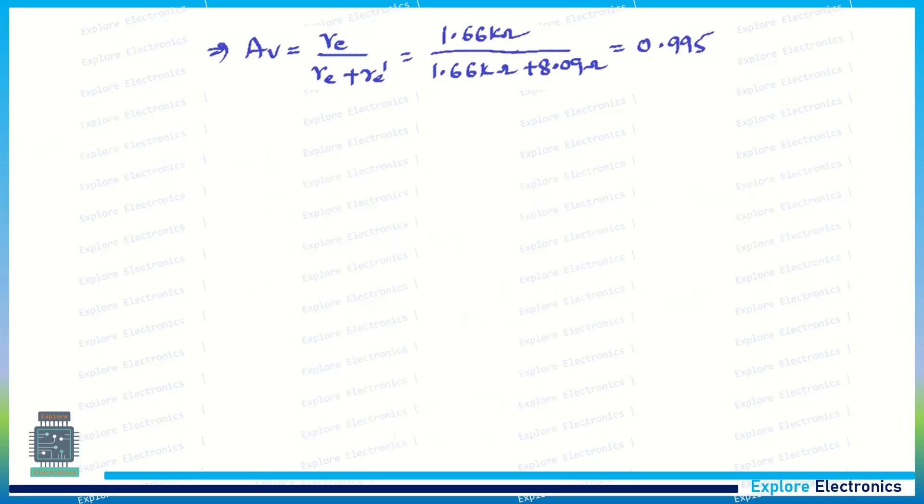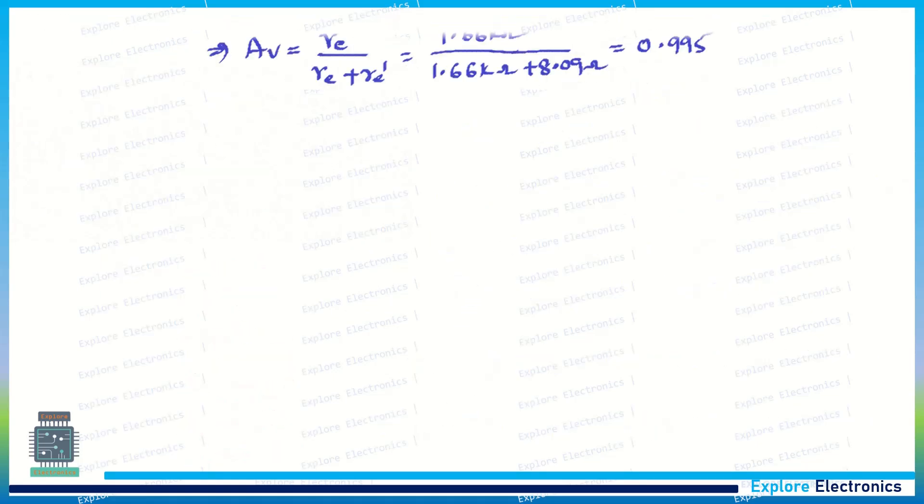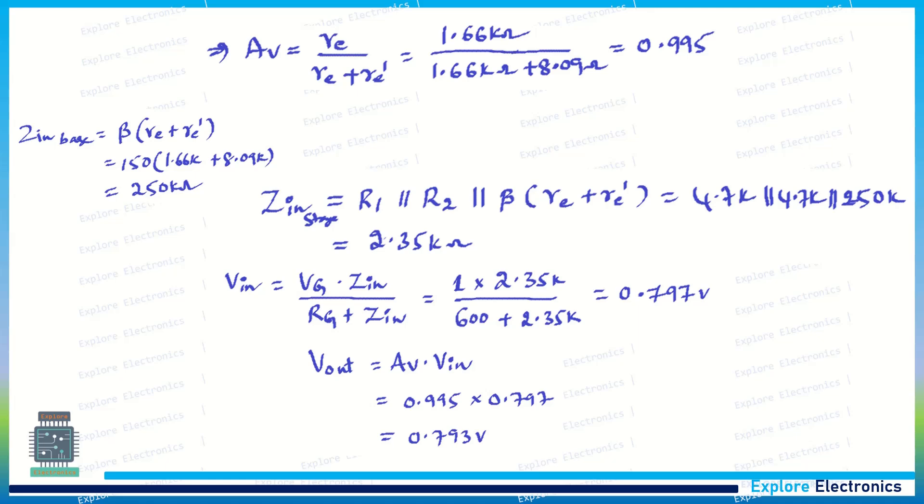Now we need to calculate the next part of the question, that is AC load voltage by taking β = 150. Zin stage, the input impedance, we need to calculate using the expression: R1 parallel with R2 parallel with Zin(base), where Zin(base) = β(re' + RE).